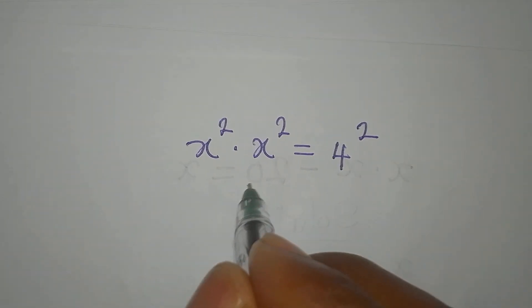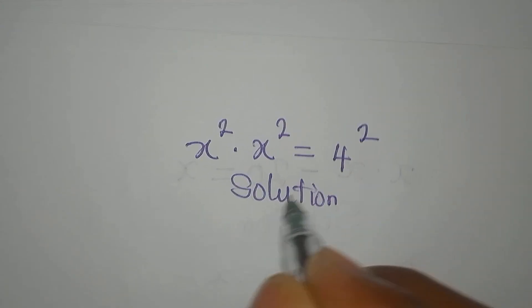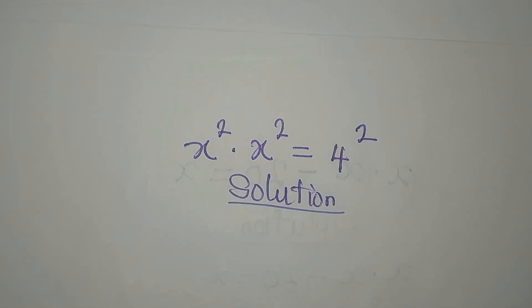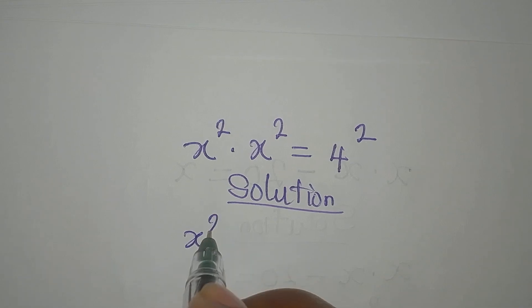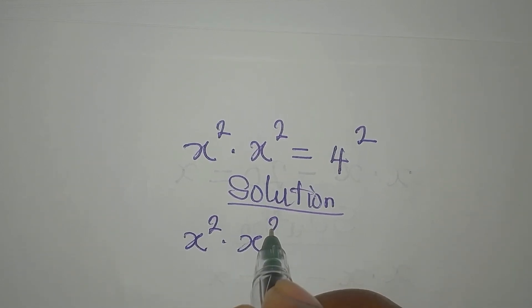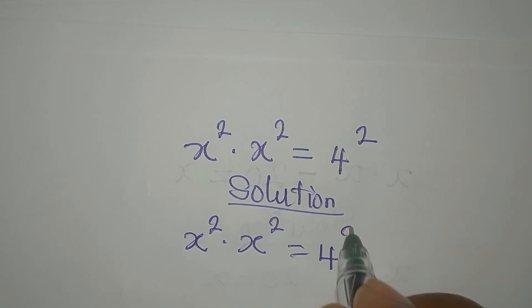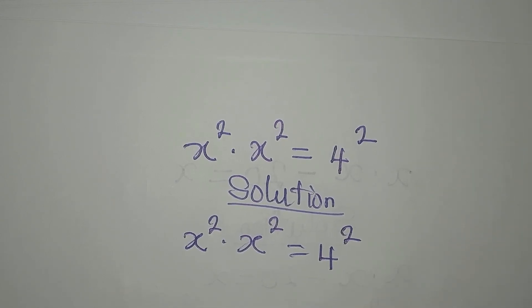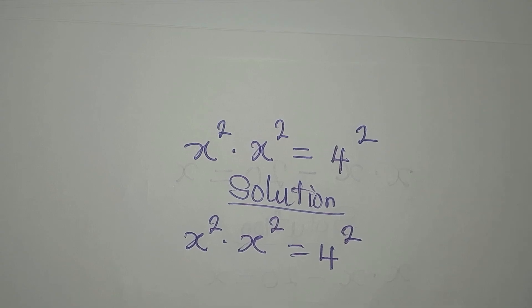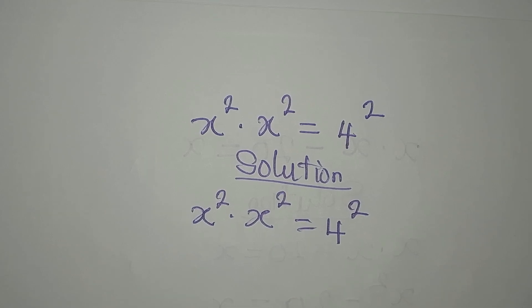Hello everyone, let's provide the solution to this problem: x to the power of 2 multiplied by x to the power of 2 equals 4 to the power of 2. We want to deal with this problem. The question is what should we do. We are to solve this completely.